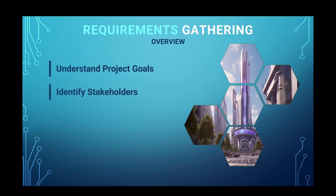Understand what the desired outcomes are of the enterprise architecture initiative and how it aligns with the organization's overall strategy. Two, identify the stakeholders involved. Determine who the key stakeholders are, understand their roles, responsibilities, and even influence within the organization. Third, understand the context and the architecture vision — familiarizing yourself with the current state of the organization's architecture landscape and identifying any existing architecture frameworks, standards, or practices already in place.